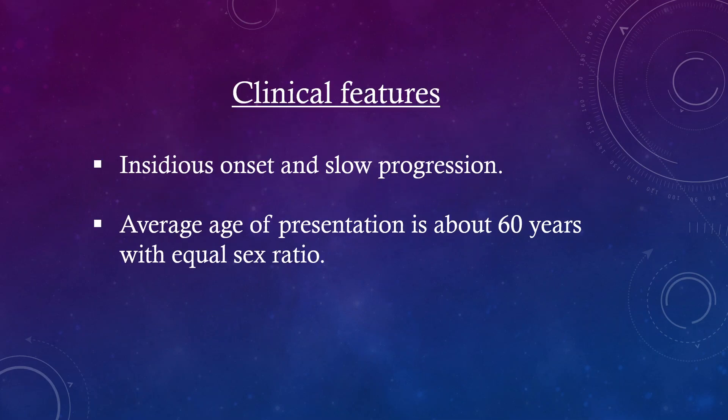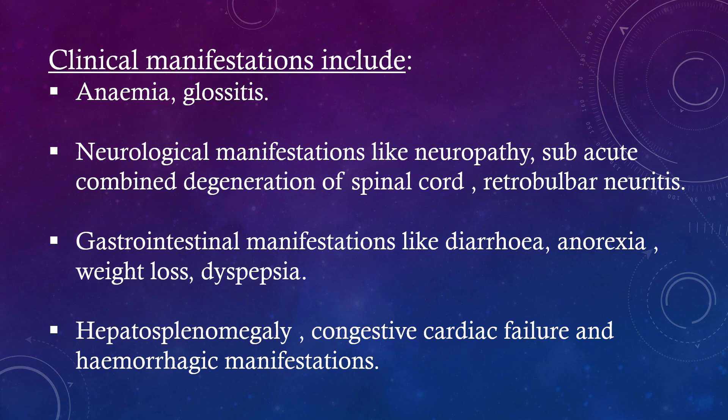Clinical features. Insidious onset and slow progression. Average age of presentation is about 60 years with equal sex ratio. Clinical manifestations include: anemia, glossitis, neurological manifestations like neuropathy, sub-acute combined degeneration of spinal cord, retrobulbar neuritis, gastrointestinal manifestations like diarrhea, anorexia, weight loss, dyspepsia, hepatosplenomegaly, congestive cardiac failure, and hemorrhagic manifestations.